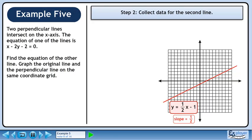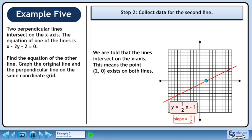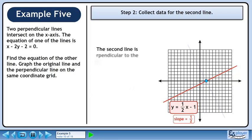In step 2, we'll collect data for the second line. We are told that the lines intersect on the x-axis. This means the point exists on both lines. The second line is perpendicular to the first line, so it has a slope of -2.